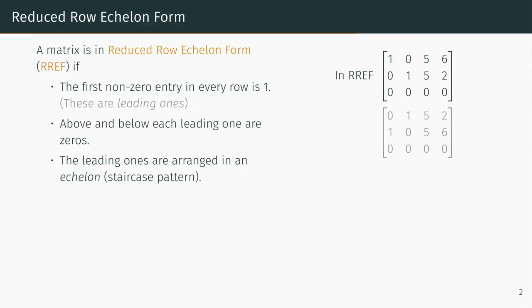In the next matrix, the first non-zero entry in every row is a 1, and above and below those leading ones are zeros. But the leading ones are not arranged in an echelon pattern. Therefore, it is not in reduced row echelon form.